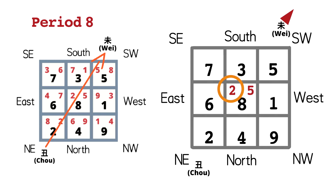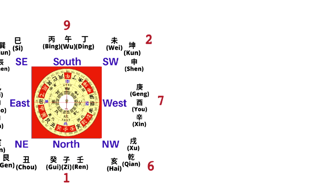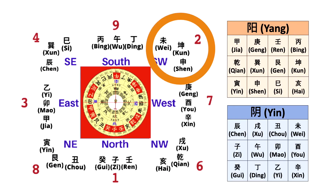The sitting star is number 2. We need to know where number 2 is on the luopan. As we can see on the luopan, number 2 has three mountains — that's Wei, Kun, and Shen.